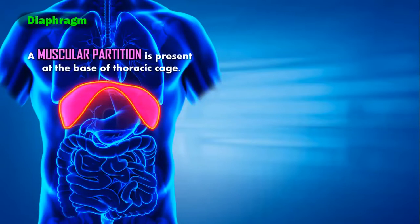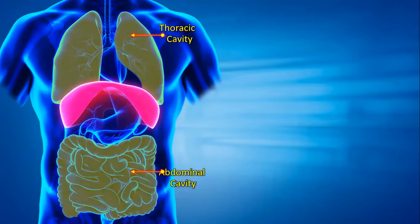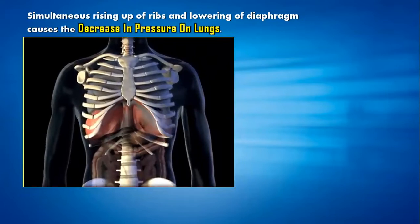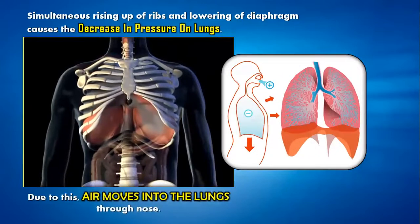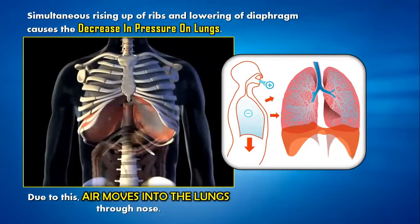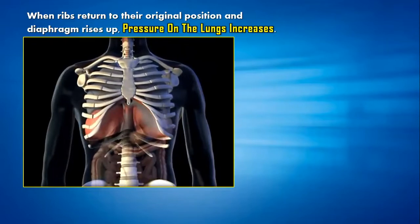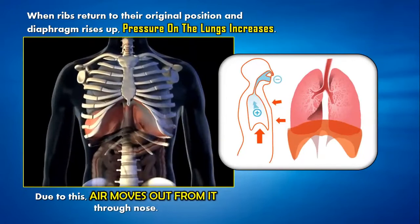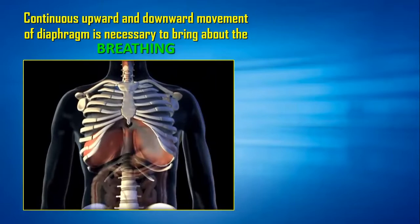The diaphragm is the pink-colored part visible below the lungs between the thoracic and abdominal cavities. The simultaneous rising of ribs and lowering of the diaphragm decreases pressure on the lungs, causing air to move into the lungs through the nose. When the ribs return to their original position and the diaphragm rises up, pressure on the lungs increases and air moves out. This continuous upward and downward movement is called breathing.